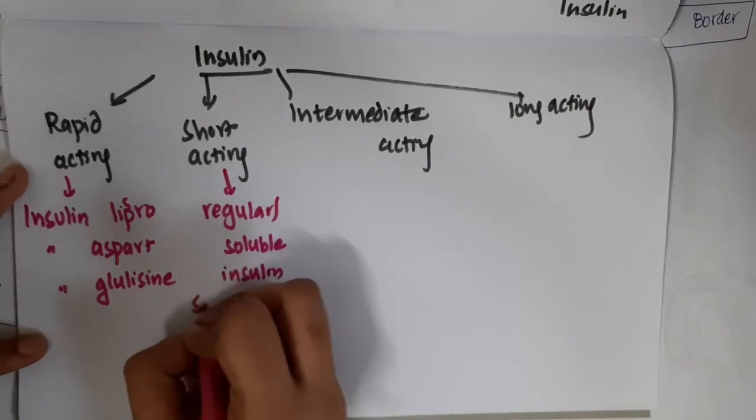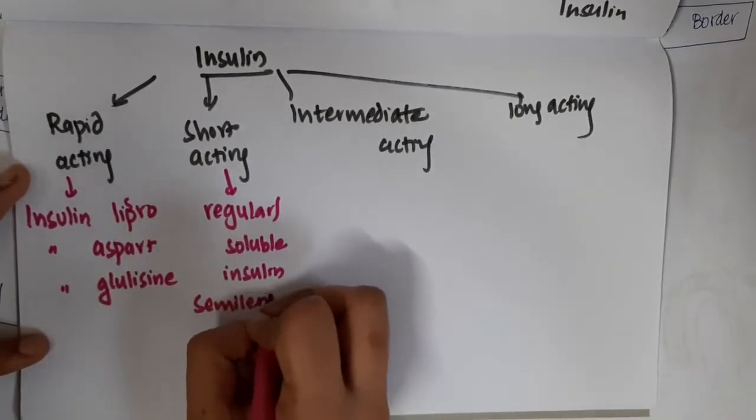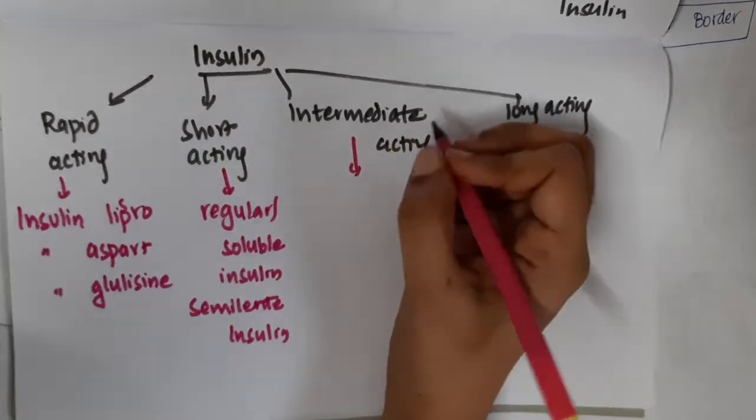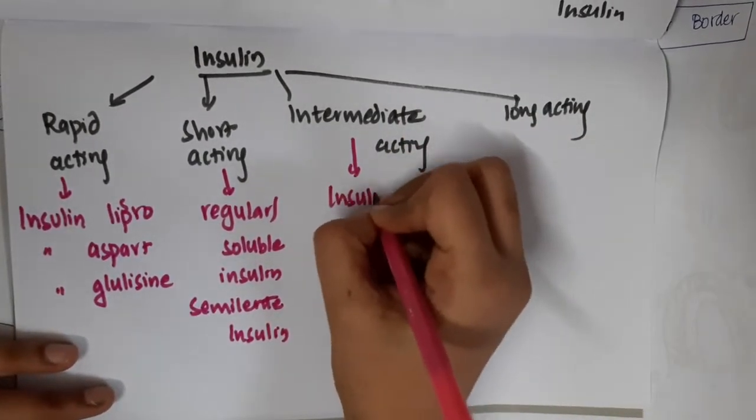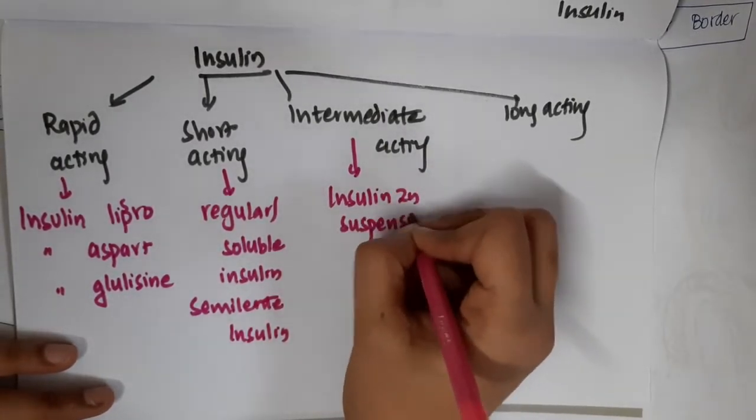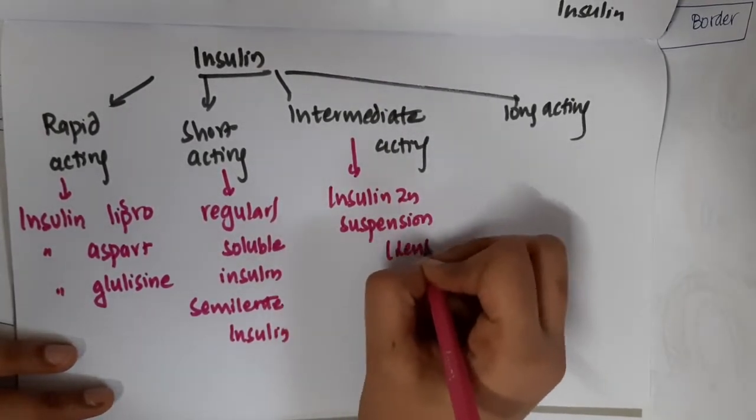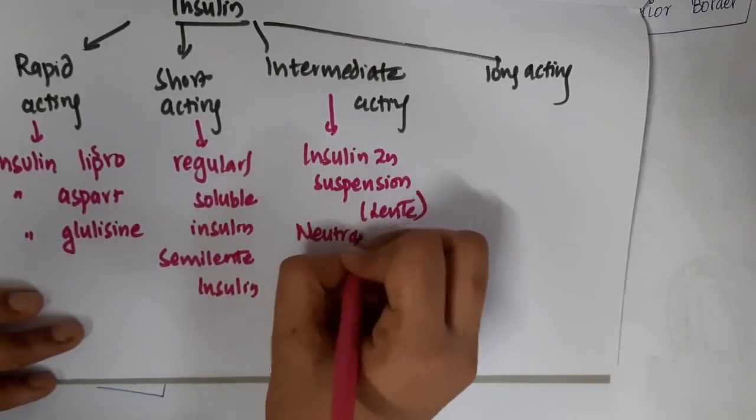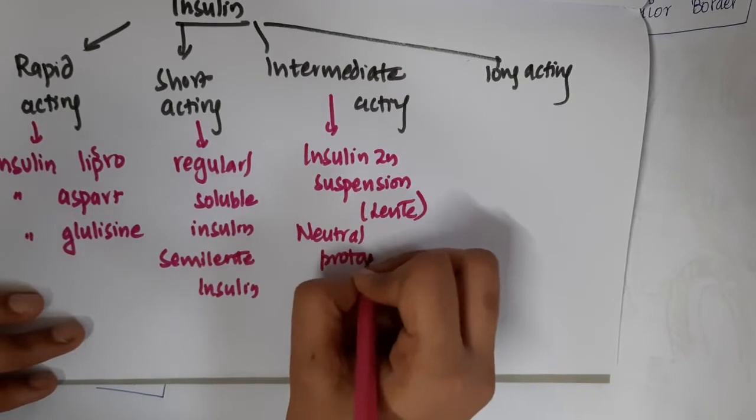Then we have semi lente insulin, which is also short acting insulin. If you see intermediate acting insulin, these include insulin zinc suspension, which is nothing but lente, then we have neutral protamine.